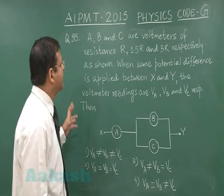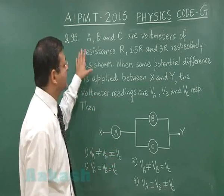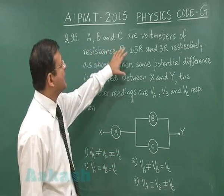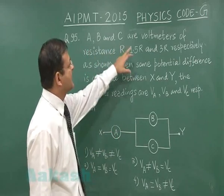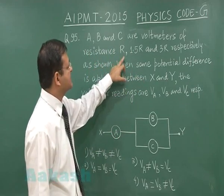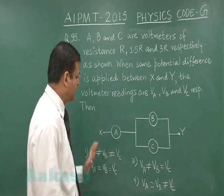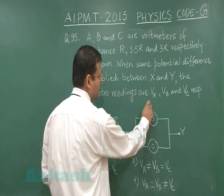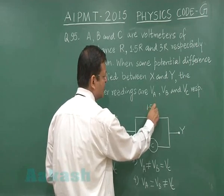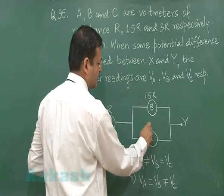Now, Question 95 is from the chapter on current electricity. It reads that A, B, and C are voltmeters as shown in the diagram. You can see here A, B, C are voltmeters of resistances R, 1.5R, and 3R respectively. That means the resistance of this voltmeter will be R, resistance of B is 1.5R, and resistance of C is 3R, as shown in the diagram.